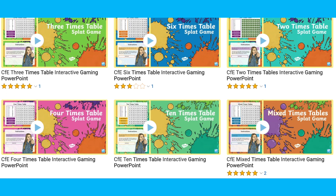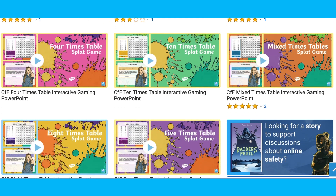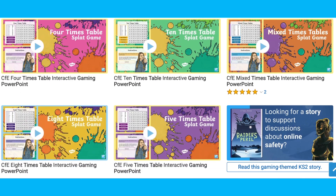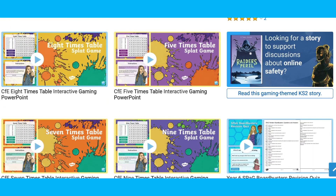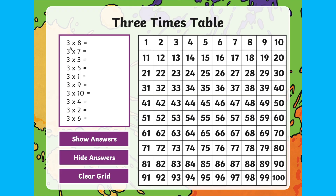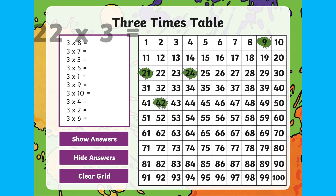Have a look at our helpful interactive gaming times tables PowerPoints, where your child needs to splat the correct answer to the questions on the left-hand side. The splat game can also be used for random questions in the times tables up to answers including 100 — so in this three times tables PowerPoint you could ask your child any question up to 33 times 3.